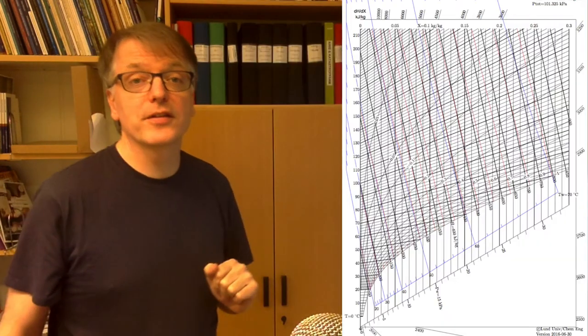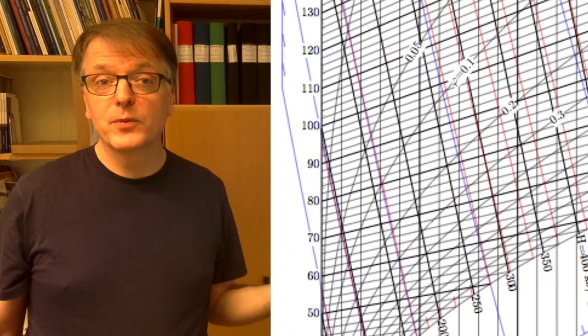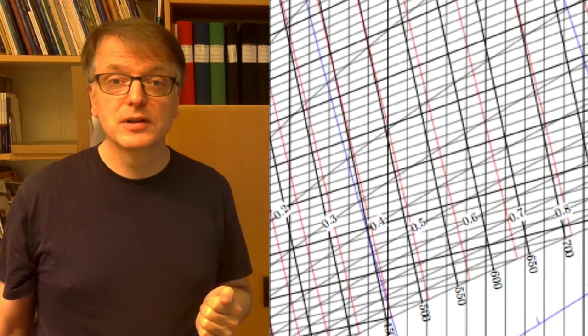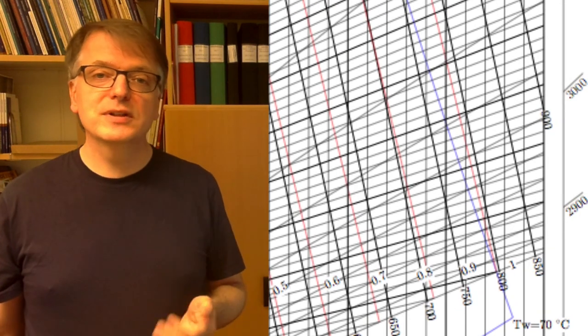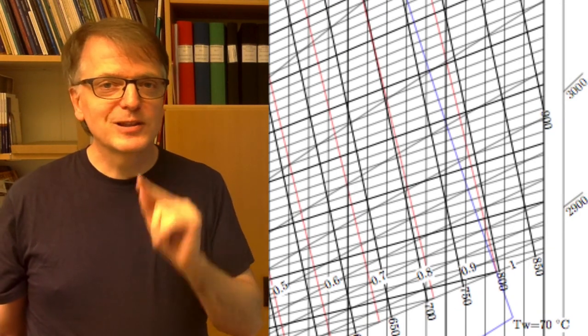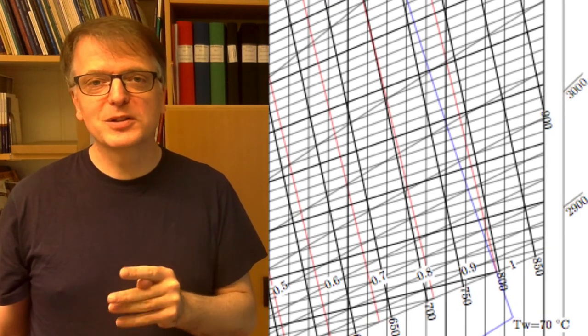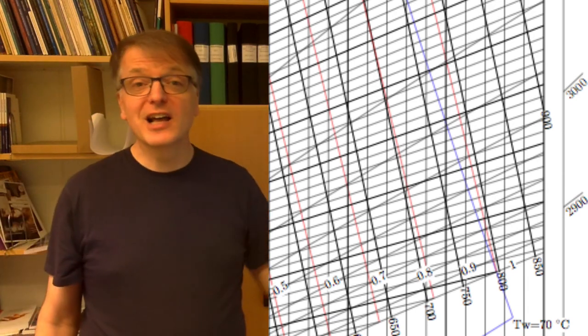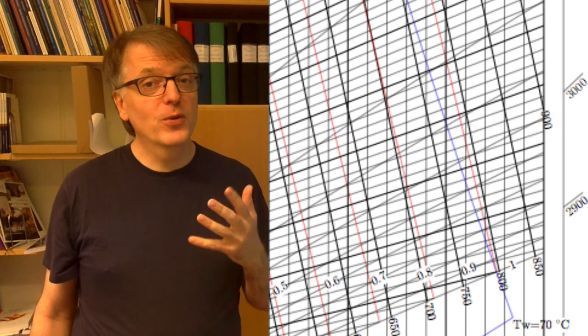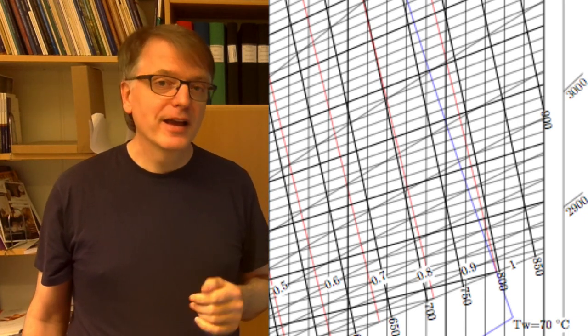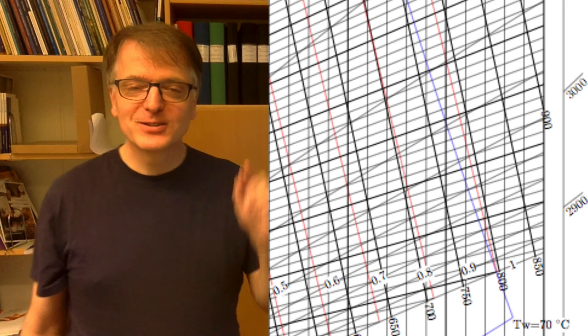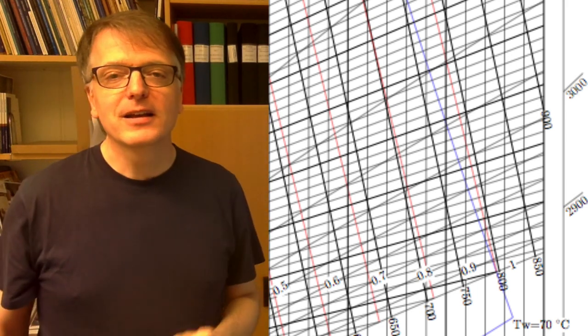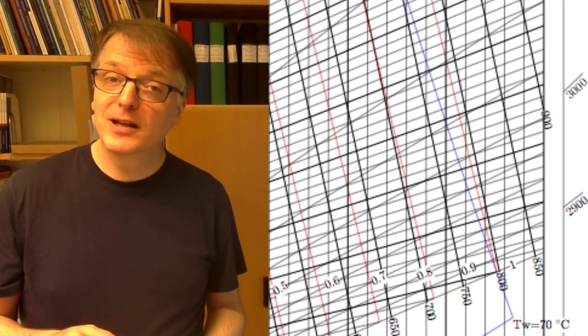And if you instead look at another diagram with up to 200 degrees, you see that there is a difference. And the main difference here is that the slope is constant for the adiabatic saturation lines. So they are straight lines while for wet temperature it's not really straight. So they are a bit bent. Not much but a little bit.